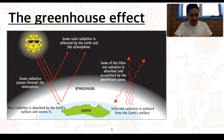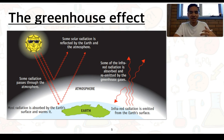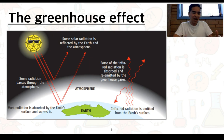Some of this radiation is going to escape out into space. Some of it, however, will be absorbed by the so-called greenhouse gases, which will then re-emit that radiation in all directions. Importantly, some of it will be re-emitted back down to the Earth, essentially acting as a barrier to trap this infrared radiation and maintain the Earth's temperature at a relatively steady rate of about 15 degrees Celsius.